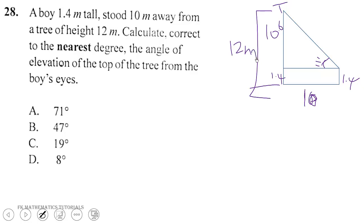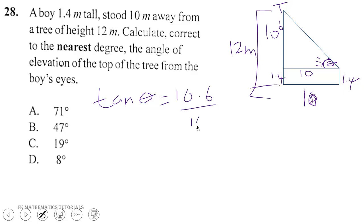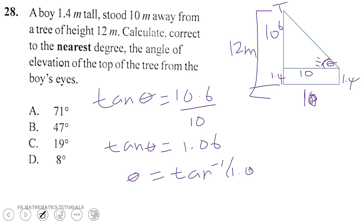We know the opposite side is 10.6 and the adjacent side is 10 meters. So tan theta equals 10.6 over 10, which equals 1.06. Therefore theta equals tan inverse of 1.06. Checking on the calculator gives 46.66 degrees, which to the nearest degree is 47 degrees.